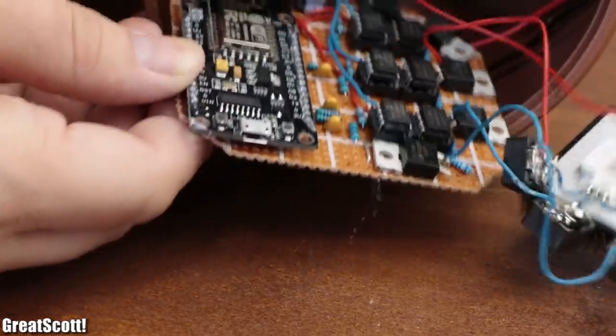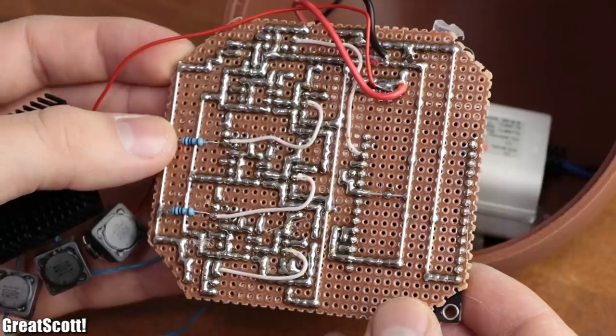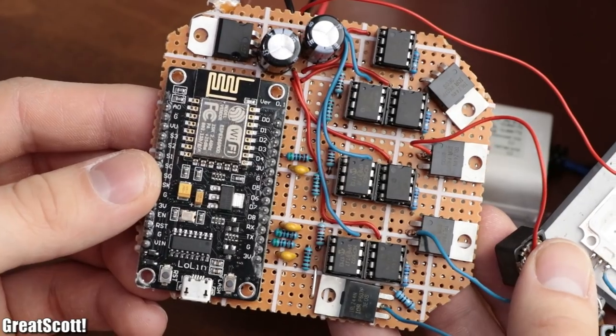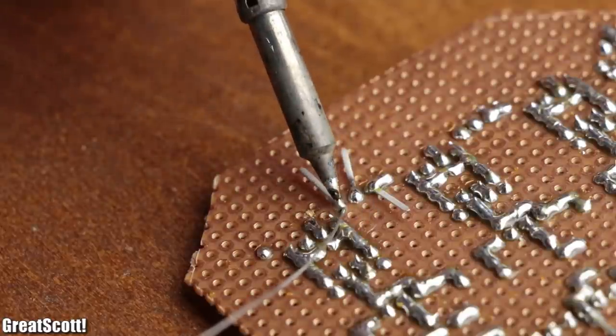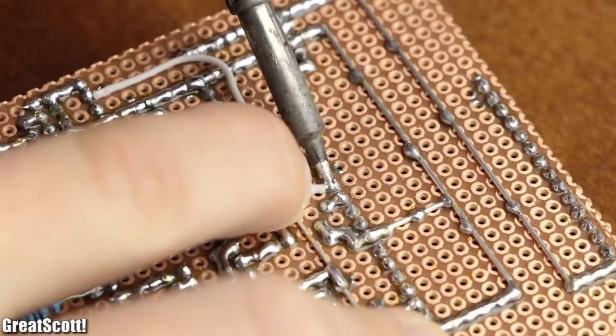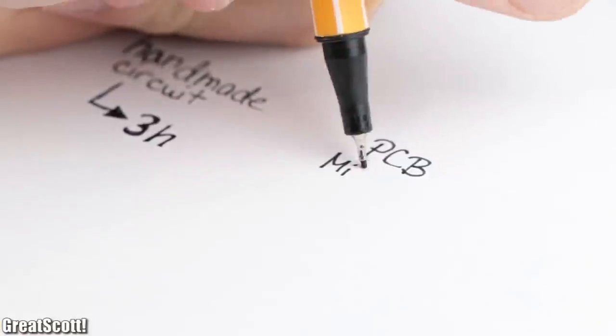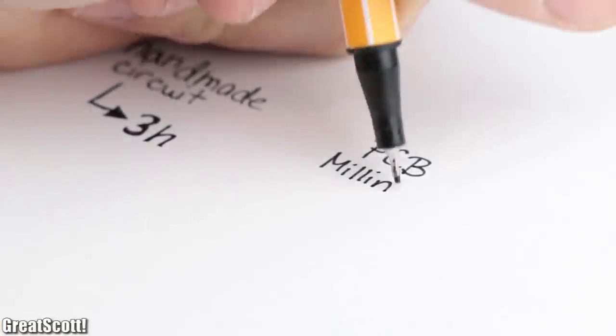As an example, let's use the circuit from my Wi-Fi RGB LED lamp project. It took me approximately three hours to solder all the components to the perfboard and connect them to one another. So the question is, is PCB milling faster?